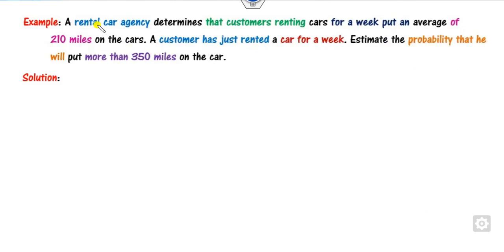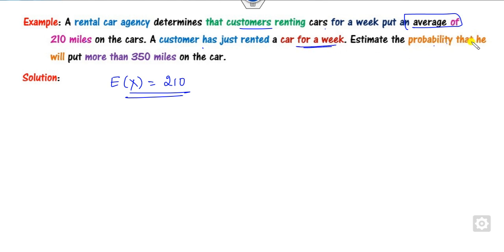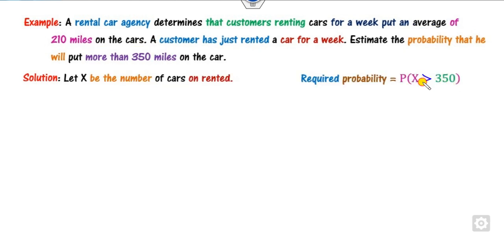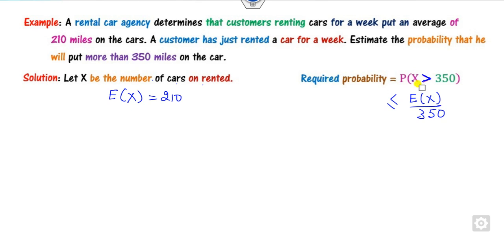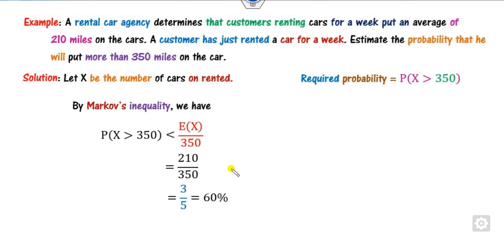A rental car agency determines the average customer rental is 210 miles per week. Find the probability that a customer will put more than 350 miles. X = number of miles driven; E[X] = 210. Since it is strictly greater than (no equality), applying Markov inequality gives P(X > 350) ≤ 210/350 = 60%.